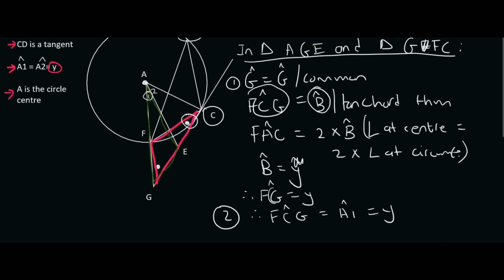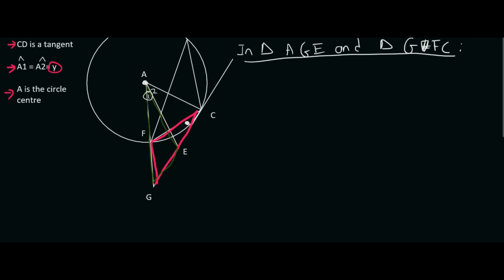So now we are pretty much complete, because remember, the third angle has to be the same because of angles in a triangle. So which angle have we not used in the pink triangle? Well, that would be this one over here. So that's GFC. And in the green triangle, we haven't used this angle. So we can call that angle GEA.